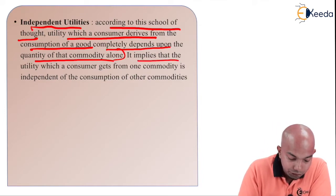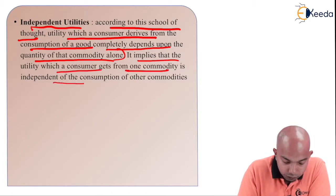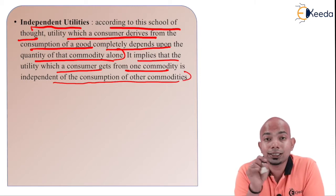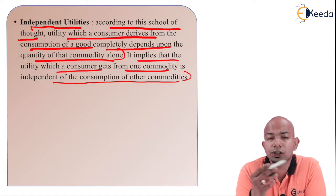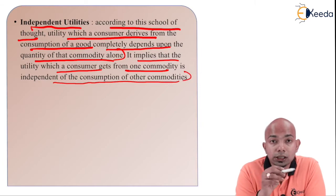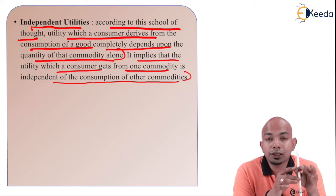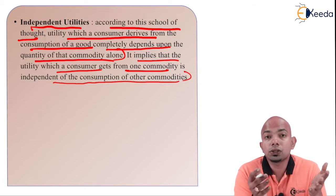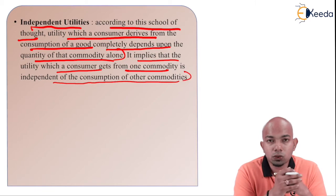It implies that the utility a consumer gets from one commodity is independent of the consumption of other commodities. If a mango gives me a certain level of utility, it is not necessary that an orange will give the same. If a Mercedes is giving you certain satisfaction, a Range Rover or Lamborghini will give you a different level of satisfaction — that also depends on the consumer.